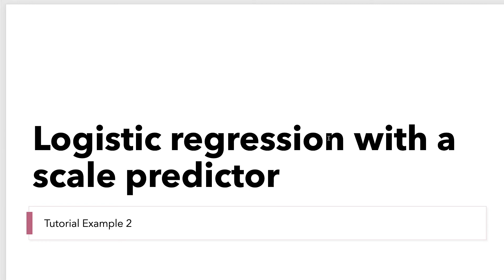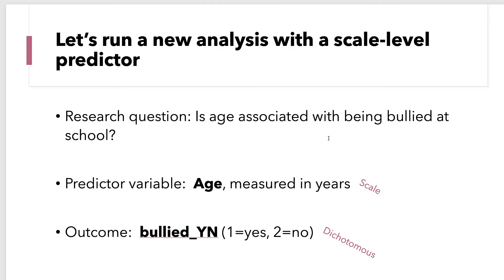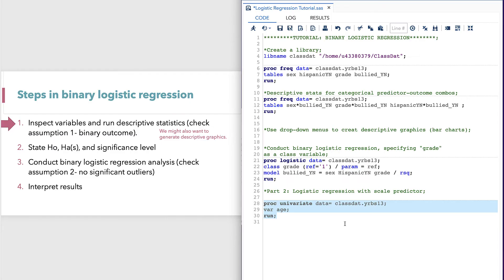The example I just showed you was logistic regression with three categorical predictors. In this next example, I'll show you logistic regression with a scale predictor, because it's a little different in terms of needing to check another assumption and in its interpretation. So let's run a new analysis with a scale-level predictor, age, making the research question: is age associated with being bullied at school? We're using the same dataset, the same outcome, just a new predictor, age.